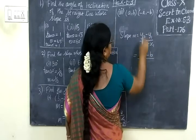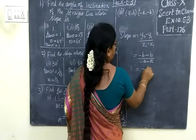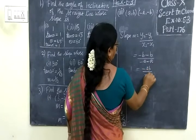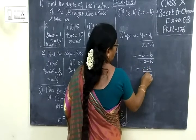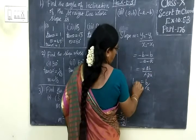By x₂ which is -a minus x₁ which is a. This equals -2b by -2a. Minus and minus, 2 cancels. So m equals b/a.